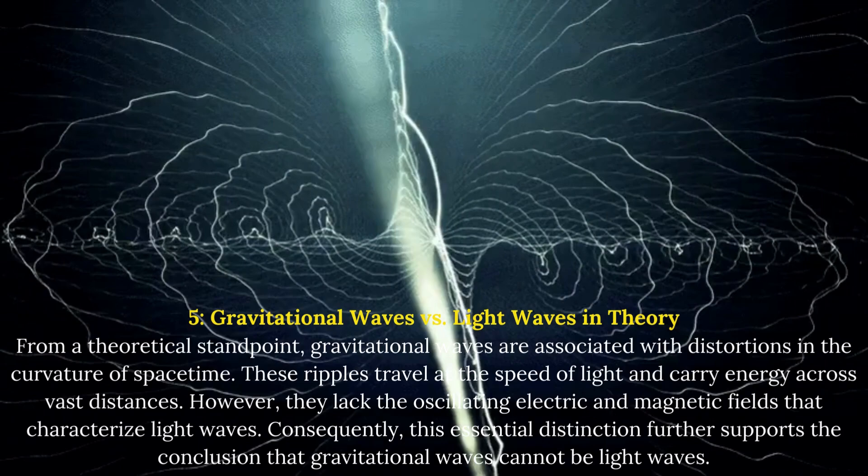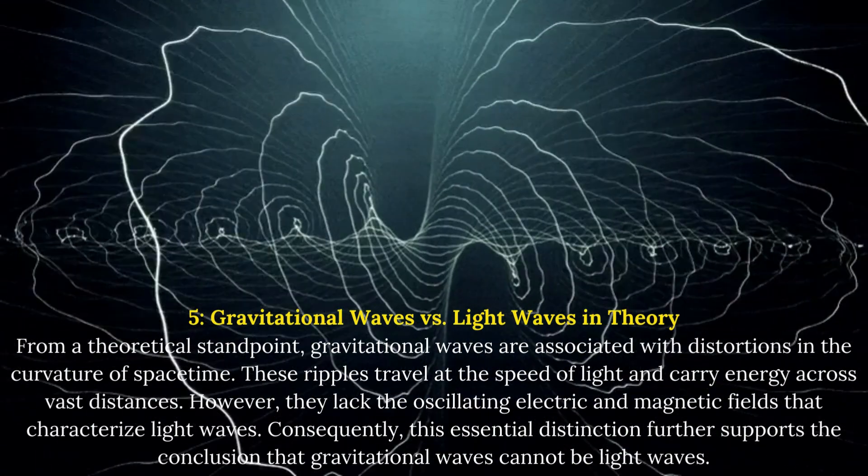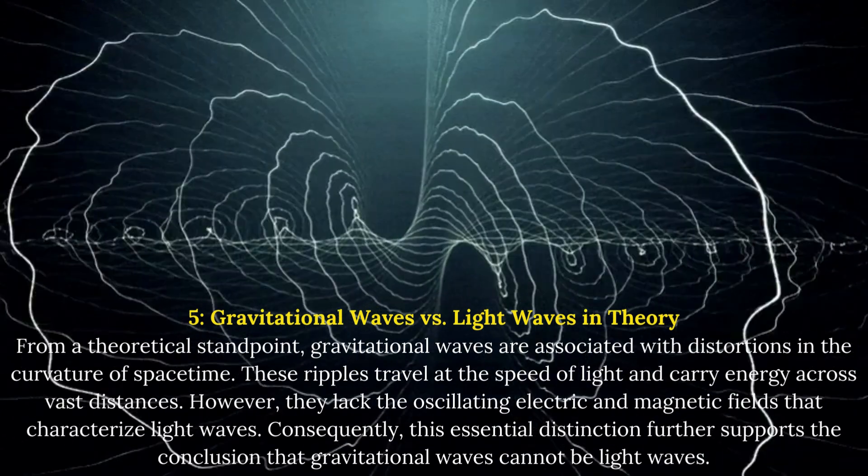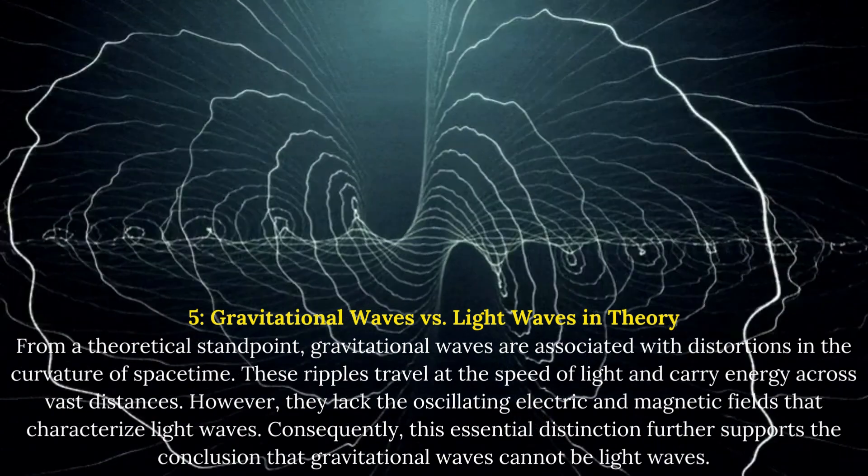However, they lack the oscillating electric and magnetic fields that characterize light waves. Consequently, this essential distinction further supports the conclusion that gravitational waves cannot be light waves.